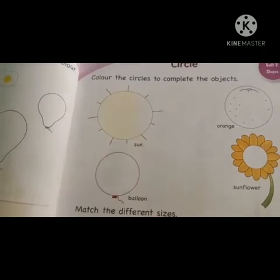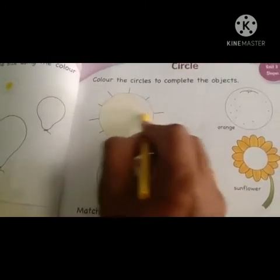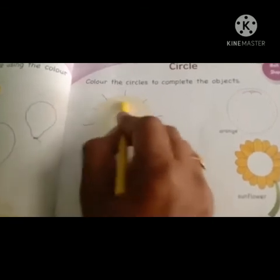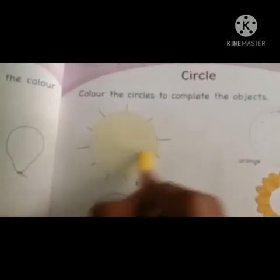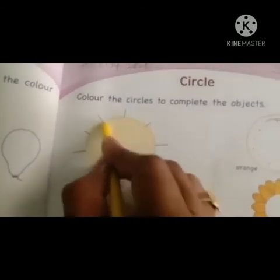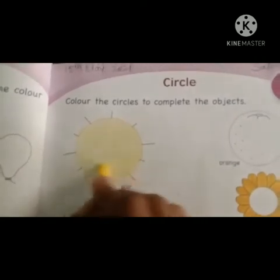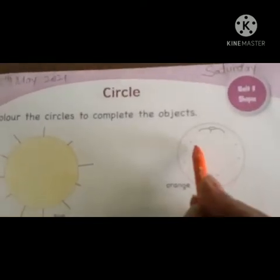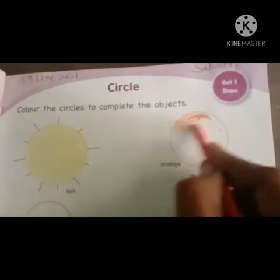This is a sun. Color it yellow. Next, a bit of orange and fill the color.